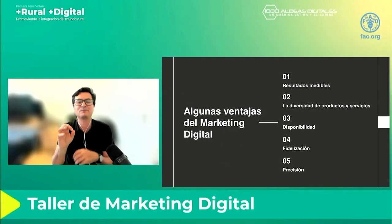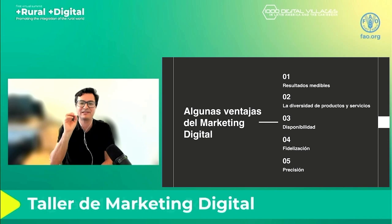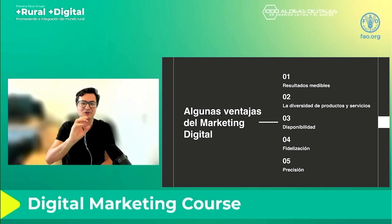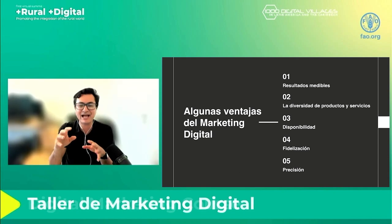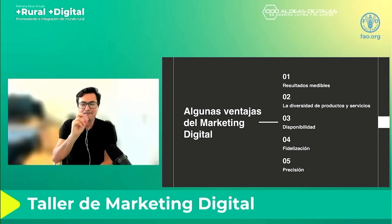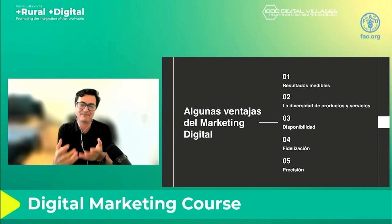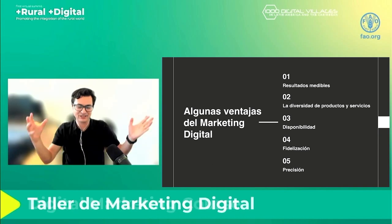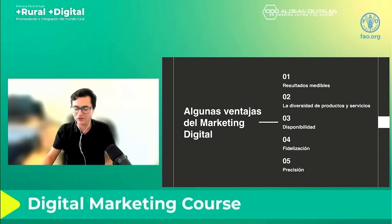The last point is precision. Digital marketing helps you to be very precise. You can say, for example, I want to sell products to women of a certain profile. You can be very specific about who you address your products to, making your campaigns more efficient. Rather than publishing in a way where everybody sees it, you target the specific people who are actually going to buy.